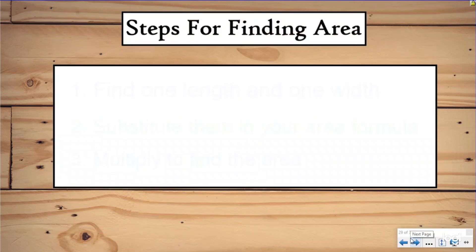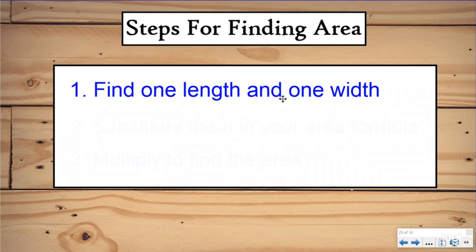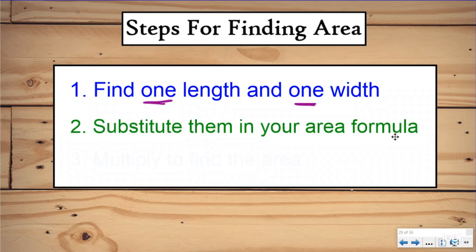So to do that, we want to have some steps in place. So go ahead and write these down in your notes. If you don't have your notes, you can find them in the description to the video. Step number one, if we're trying to find area of a rectangle, we want to find one length and one width. We talked a little bit about that last lesson and how important it is that we find one of each. But we'll go over that again today. We want to substitute them into your area formula. So put the length for the L and the width for the W. And then we're going to use repeated addition. We're going to multiply to find the area. Those are our three steps we're going to do.